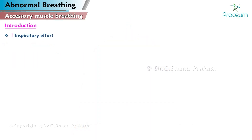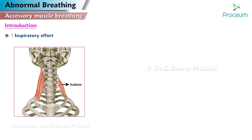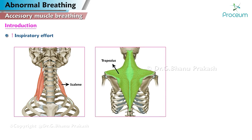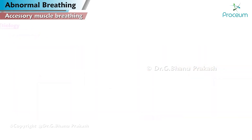When inspiratory effort increases, it requires the use of the sternocleidomastoid, scalene, trapezius, internal intercostal, and abdominal muscles. These are known as accessory muscles of breathing.